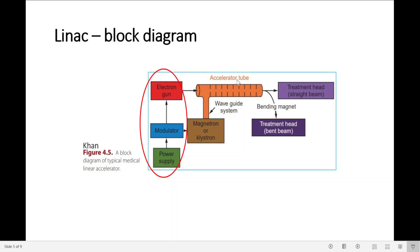In the accelerator tube, the electrons are accelerated by the high power microwave towards the treatment head. When the electrons exit the accelerator tube, they are in the form of a pencil beam, with approximately three millimeters in diameter. And they are high energy electrons.